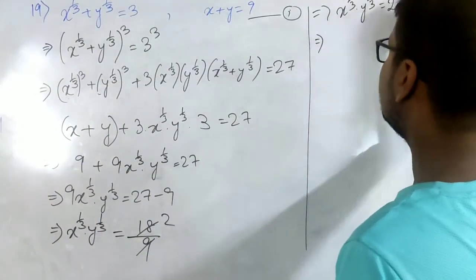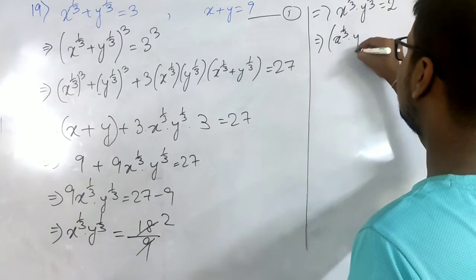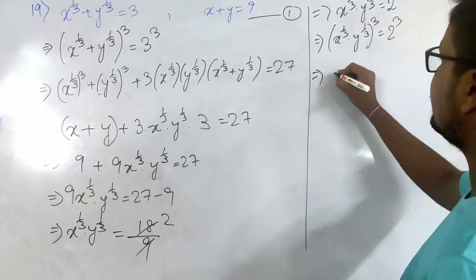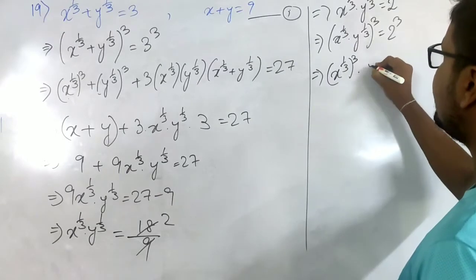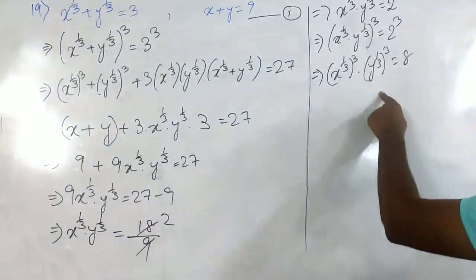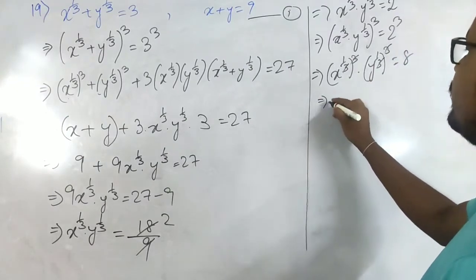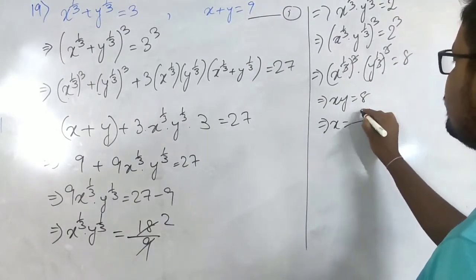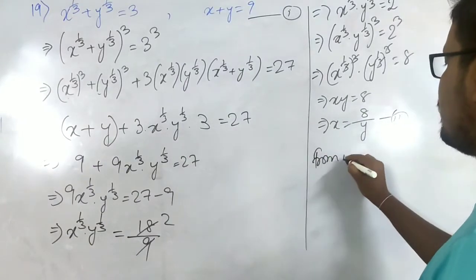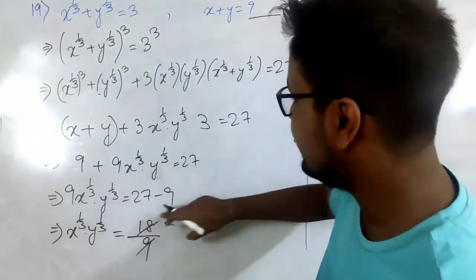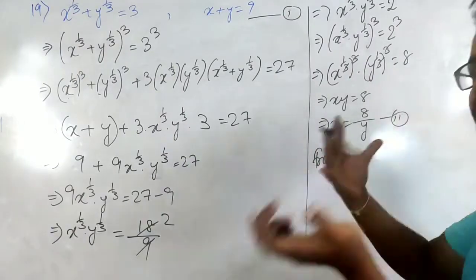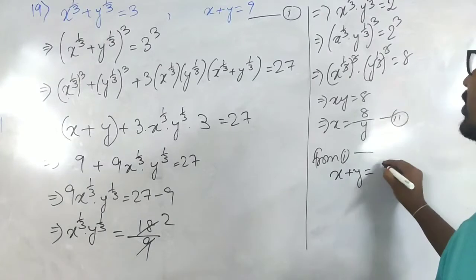Now cubing both sides again: (x^(1/3) · y^(1/3))³ = 2³. Since there is multiplication, 3 × (1/3) cancels on both x and y, giving xy = 8. So x = 8/y — let's call this equation 2. We put this value into equation 1: x + y = 9, so (8/y) + y = 9.